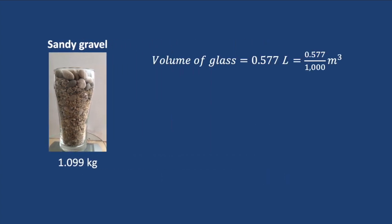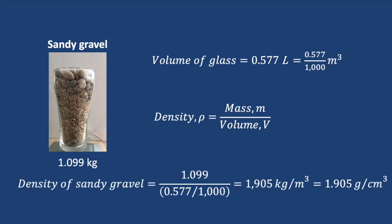We measured the volume of the glass by weighing how much fresh water can be added to an empty glass. It works out at 0.577 kilograms, which is the same as 0.577 liters. Applying the formula for density, we take the weight of the sandy gravel 1.099 and divide it by the volume of the glass 0.577, and it works out at 1.905 grams per cubic centimeter, or 1,905 kilograms per cubic meter.